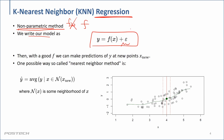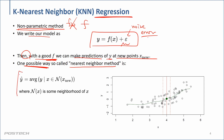We can write our model as f plus some noise or errors. With a good function f, we want to make good predictions of y at a new point. One possible way to do this is the nearest-neighborhood method. It looks complicated, but it's extremely simple — let me give you the explanation for KNN.